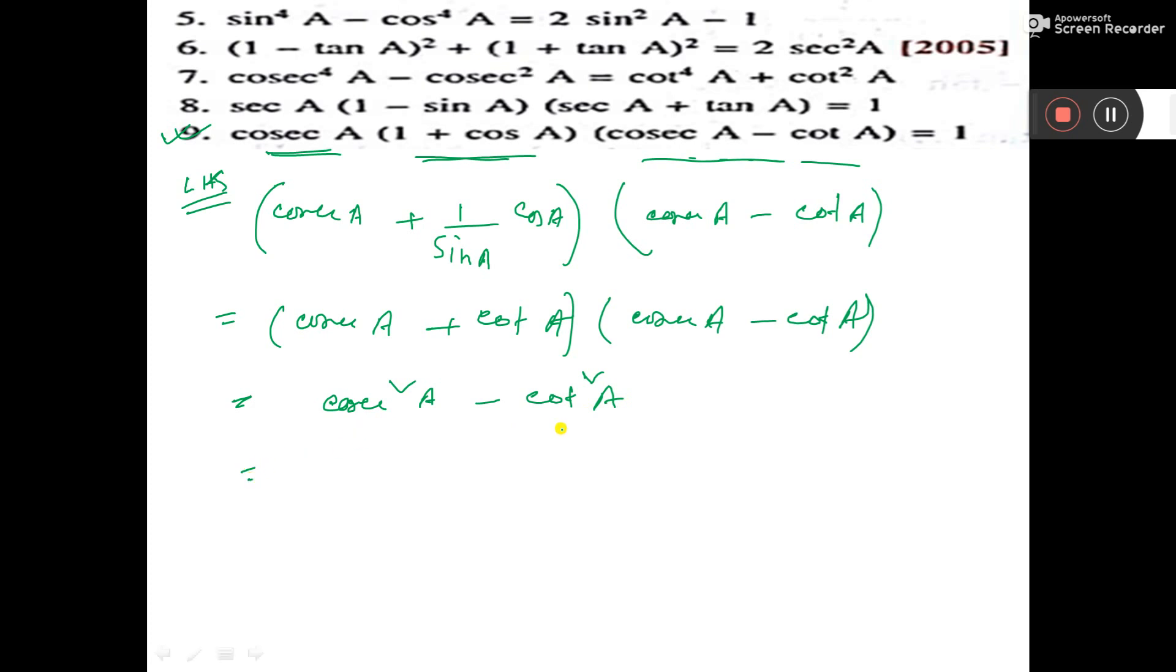Now cosec square A minus cot square A formula is 1. And our right hand side also was 1. So that is equal to right hand side. It is proved.